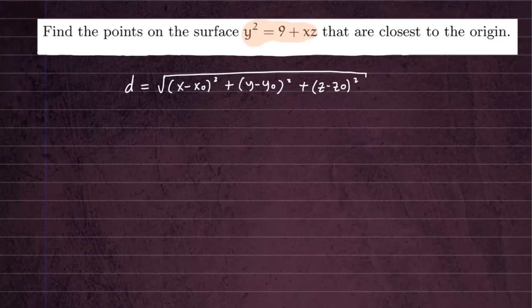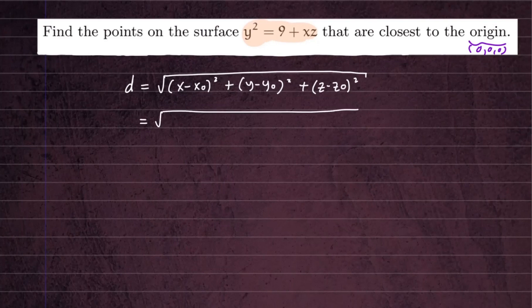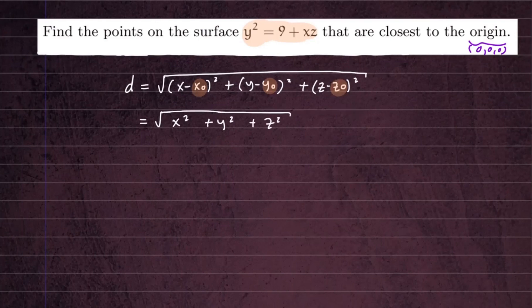Now we're going to substitute our point, the origin. The origin has coordinates (0, 0, 0), so let's substitute those for X₀, Y₀, and Z₀. When you substitute in, you get the expression X squared plus Y squared plus Z squared under the square root. So that is going to be our distance function of X, Y, and Z.